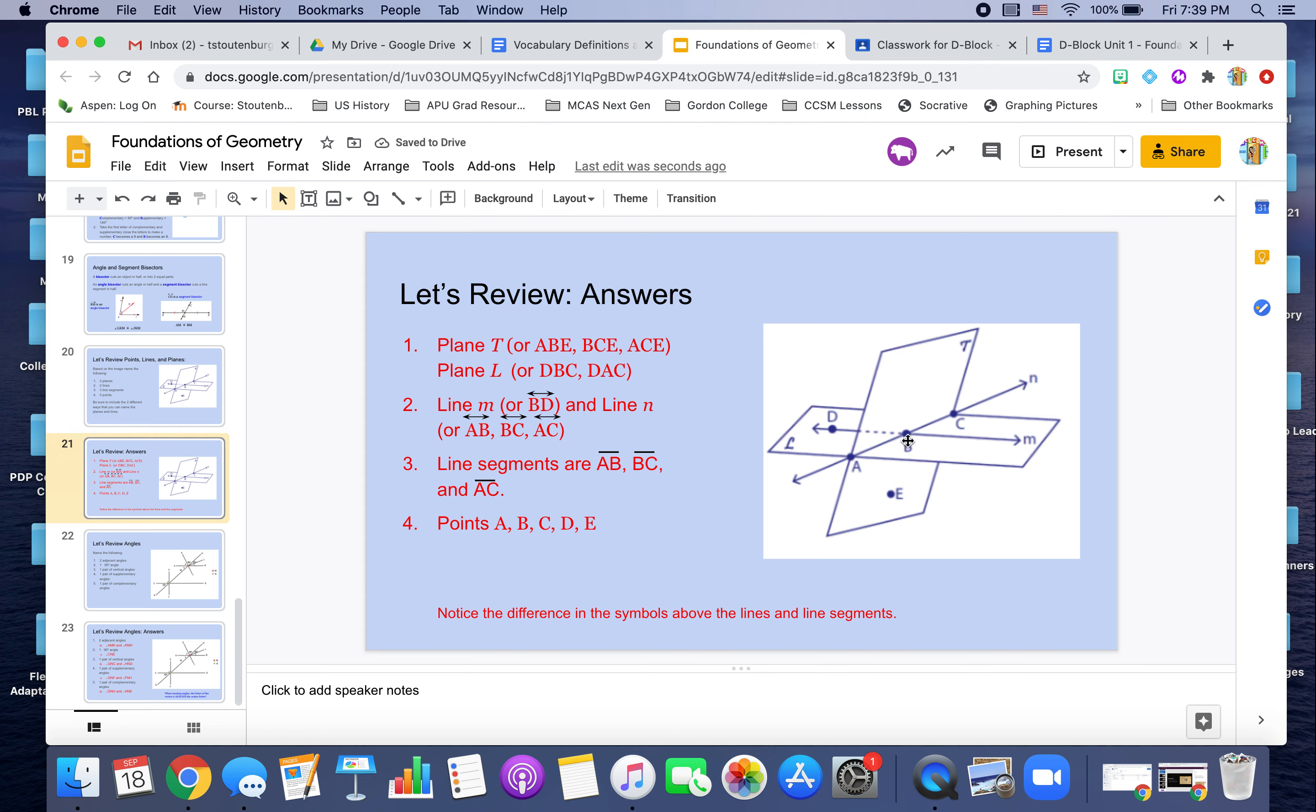Or I can use three points on the plane. Remember we don't want to use the same three points that are on the same line, because then it's confusing as to whether I'm identifying the line or the plane, but I could use for plane T, this vertical plane, I could do AEB, I could use BCE, I could use ACE.